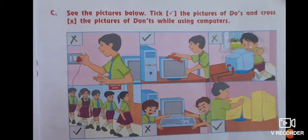Next C, which is on page number 39, see the picture below. Tick the pictures of do's and cross the pictures of don'ts while using computer. Now after checking the pictures which are given below, there is one box on the top. You have to mark a tick or cross. If that is a thing which you have to do then you have to put a tick over it, and the things which you don't have to do, there you will put a cross.